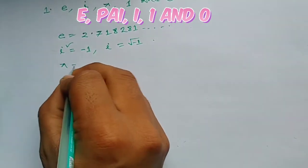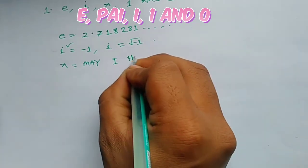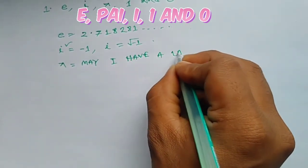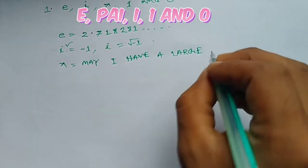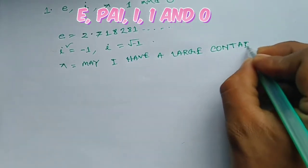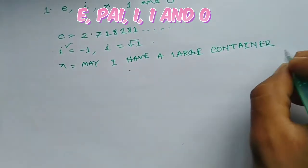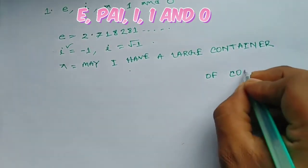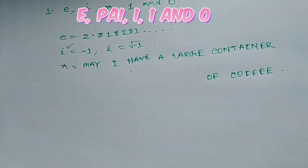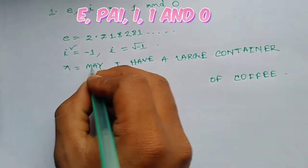To remember the digits of pi, there is a mnemonic: 'May I have a large container of coffee?' — where the number of letters in each word gives the digits of pi.